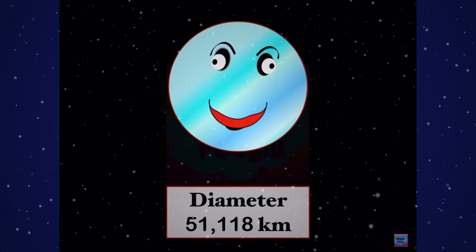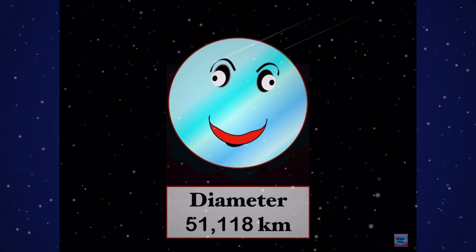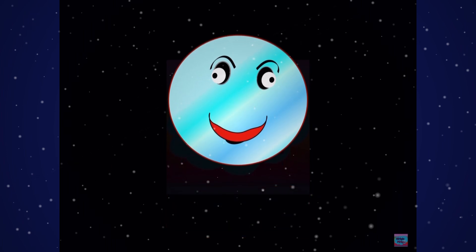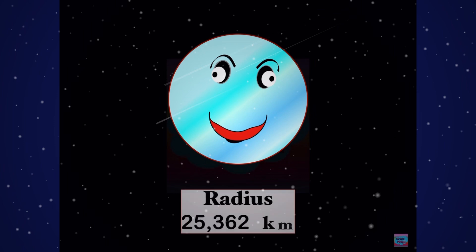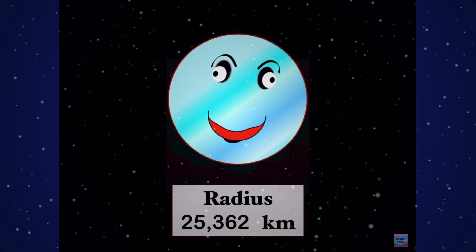The diameter of Uranus is 51,118 kilometers. The radius of Uranus is 25,362 kilometers.